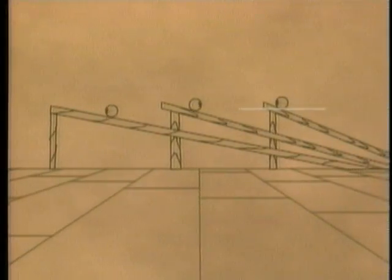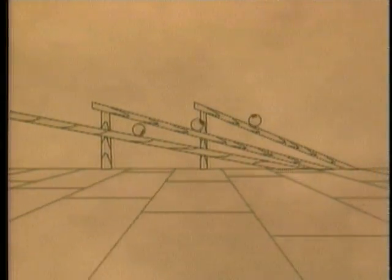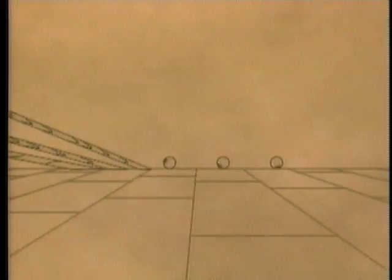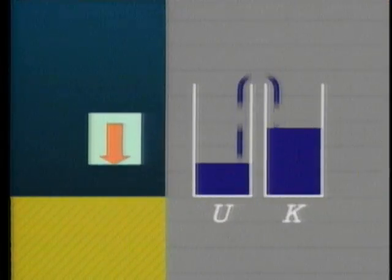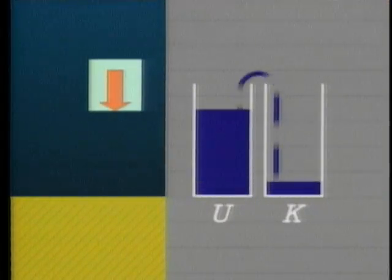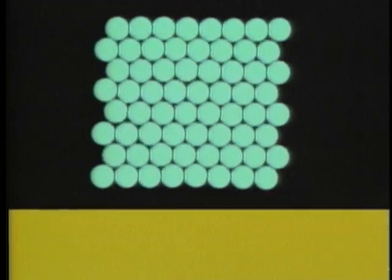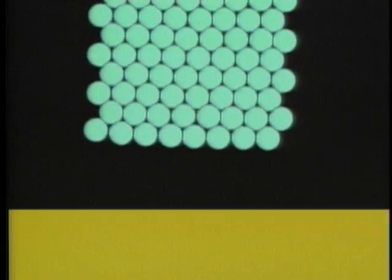Conservation of energy was first hinted at by Galileo. Balls rolling from the same height — potential energy — end up at the same velocity — kinetic energy. The sum of the potential and kinetic energy is always the same, except for the energy that is converted to heat, which is the random motion of the molecules in the object.